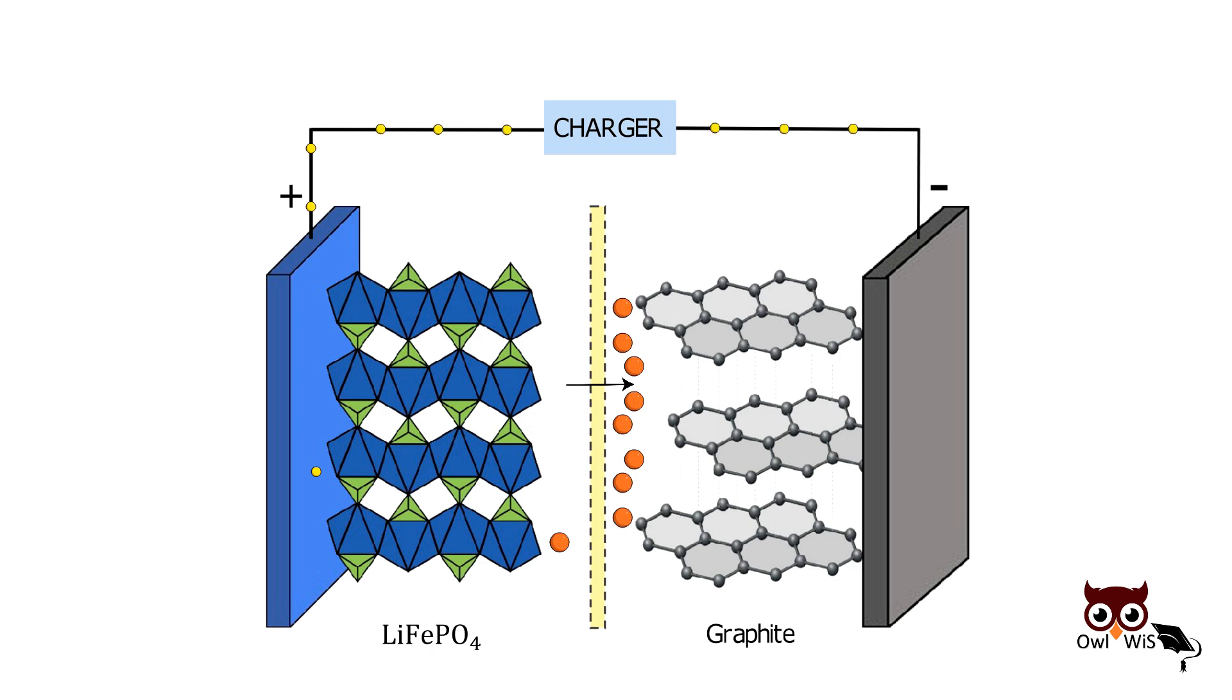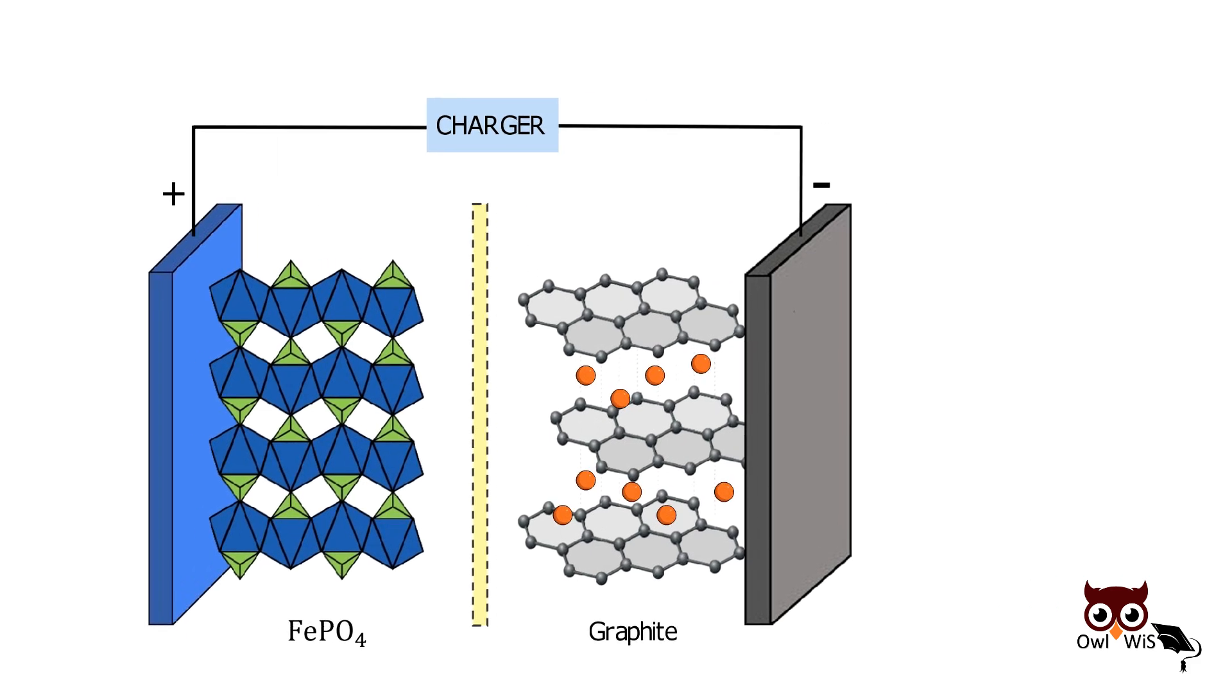The battery will be fully charged when all the positive lithium ions available in the lithium iron phosphate crystal reach the graphite terminal and are stored between layers of graphene. Accordingly, after lithium ions are de-intercalated from lithium iron phosphate, lithium iron phosphate is converted into iron phosphate.